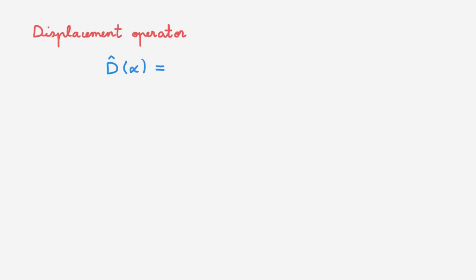We're now ready to define the displacement operator. We define the displacement operator D by an amount α as equal to the exponential of α a† minus α* a. In this expression, α is a complex scalar.